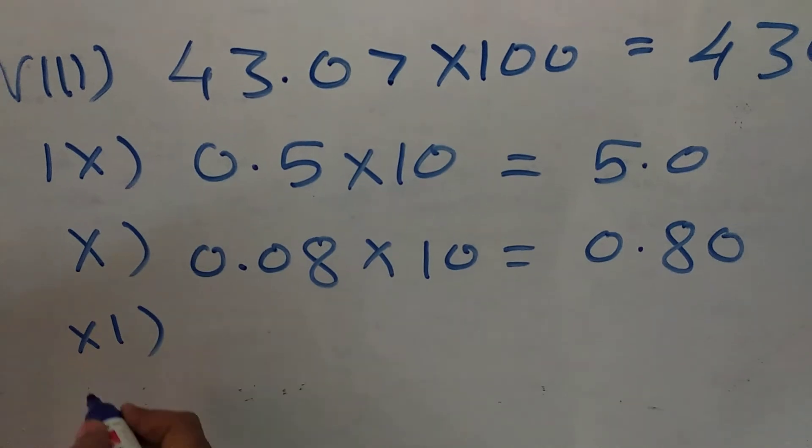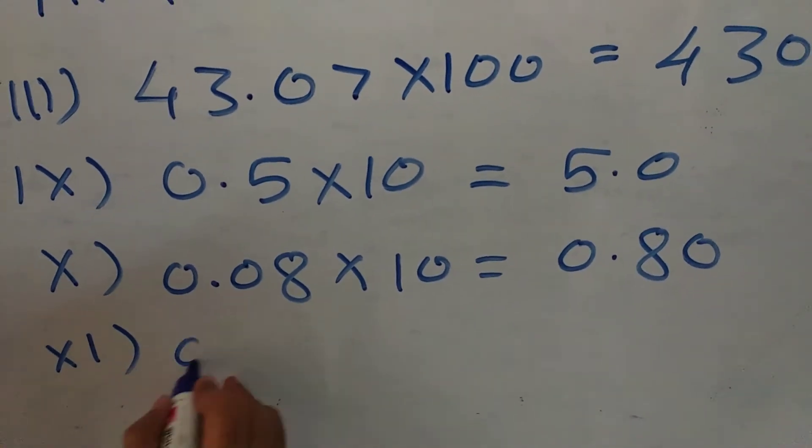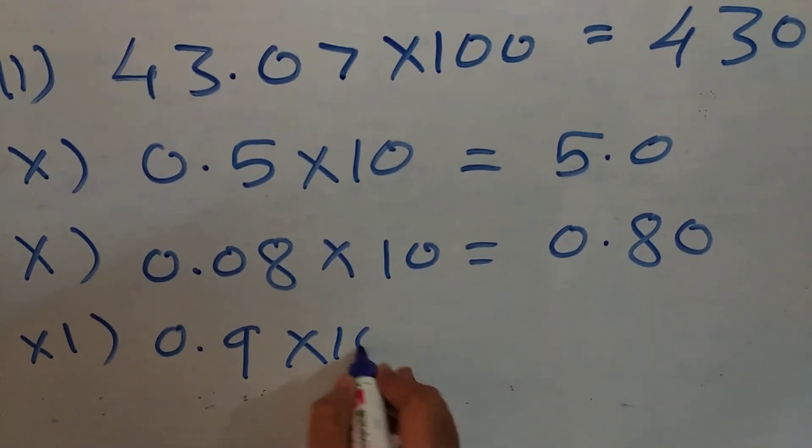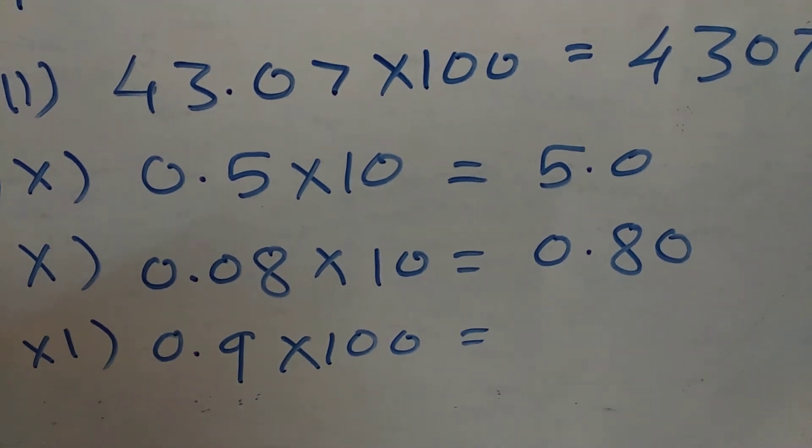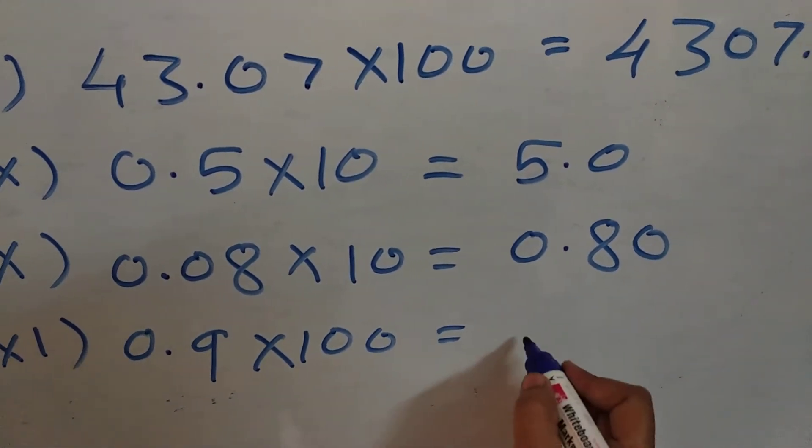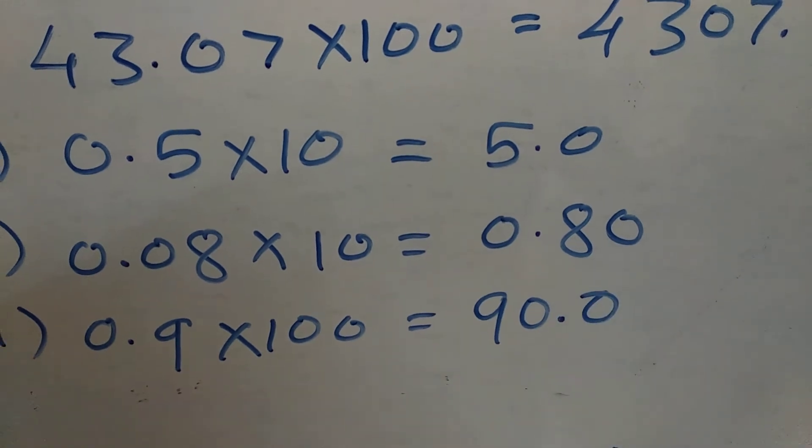Then, it is eleventh one sum is there. 0.9 multiplied by, again here multiplied by 100. So, to this you have to shift. So, 90.0 here.